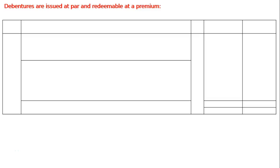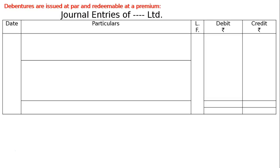The question is: issued Rs. 80,000 10% debentures of Rs. 100 each at par and repayable at a premium of 10%. Issued at par, redeemable at a premium. Draw the format and journal entries of dash-dash Limited. After writing the format, we will be passing the first entry. We are issuing Rs. 80,000 debentures at par.